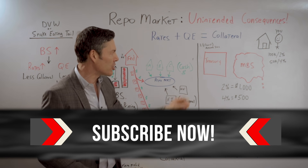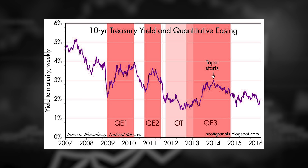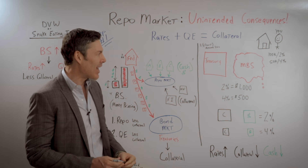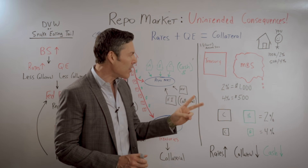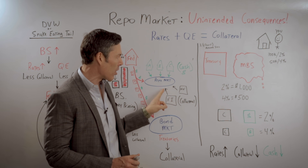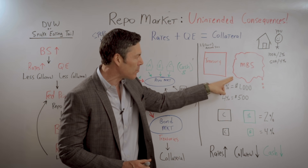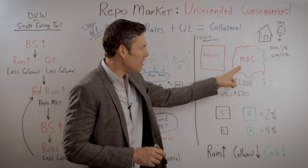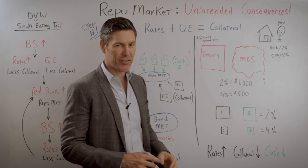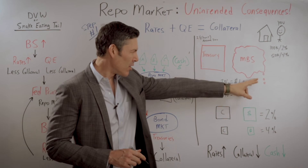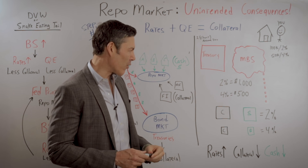If we pull up that chart from yesterday's video, we see that since 2008, if the Fed has expanded their balance sheet, interest rates on the 10-year or the real economy have actually gone up. This takes us over to the collateral issue. The two main forms of collateral in the repo market are treasuries and mortgage-backed securities. You can see that this mortgage-backed security is just toxic sludge — it's actually almost dripping off my whiteboard.